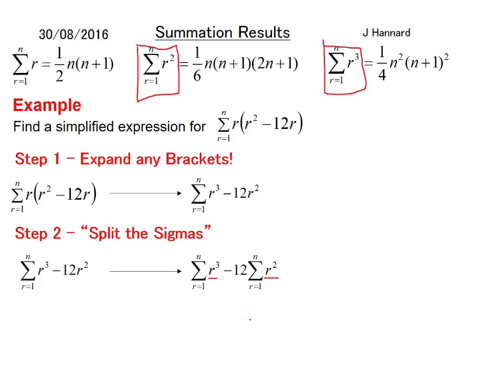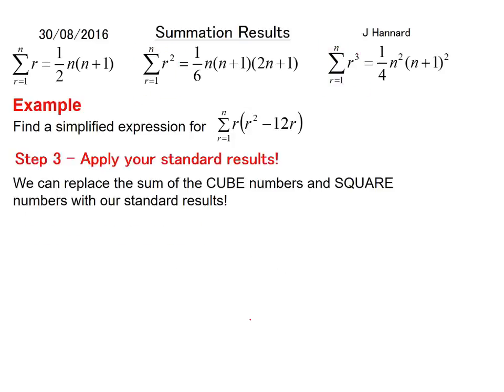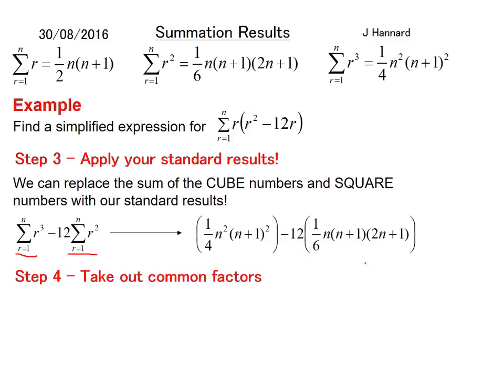Step 3 is apply your standard results. We can replace the sum of the cube numbers and the sum of the square numbers with our standard results. I would put them in brackets so you can distinguish that your 12 is there and not part of the actual chain. Then you take out any common factors. The 12 and the 6 will cancel out to make 2. A common factor from there is a quarter, but remember we'll have to put a dummy 8 in here to make sure it pops out a 2 when we expand that again.